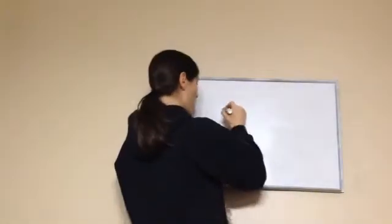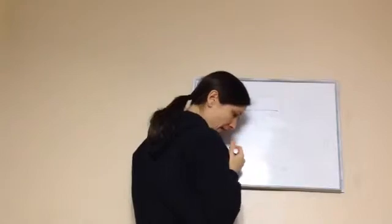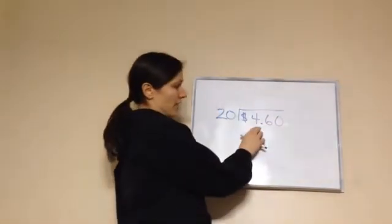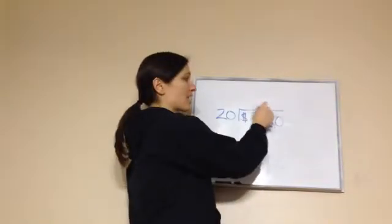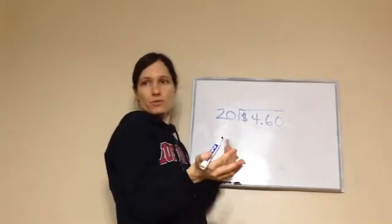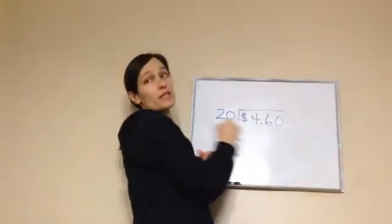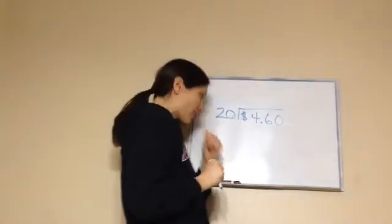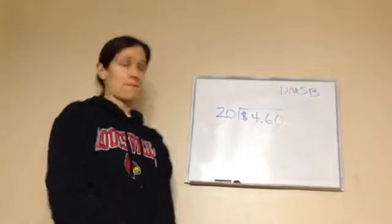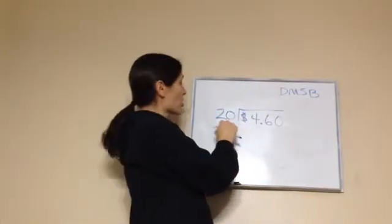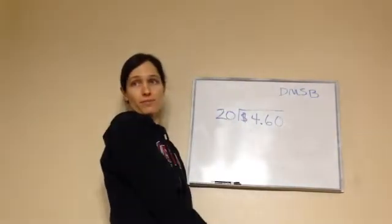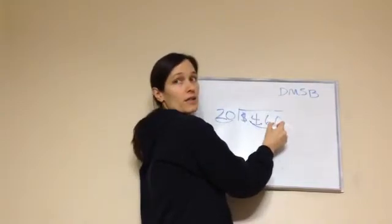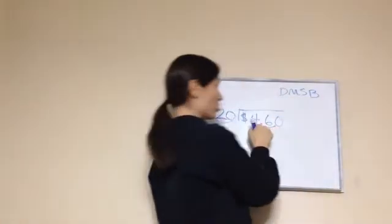Let's do one more that has a decimal. We're taking and dividing $4.60 by 20. This is saying our total amount was $4.60 and we bought 20 items — like 20 pencils — how much was each pencil? Dividing always helps us answer how much each. 'Each' is the key word for division. We're going to try 20 going into 46. Remember, you don't bring in the decimal until the end.